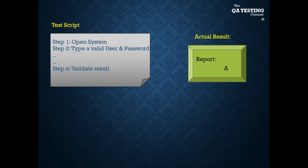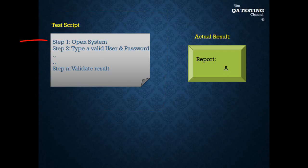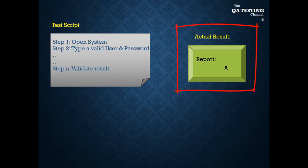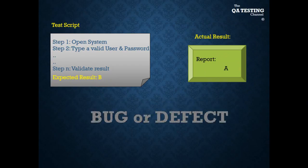The test executor, most of the time, gets a test script. The test script has all the steps that must be followed by the test executor. For example, step one: open the system. Step two: type a valid user and password, and so on. And finally, we validate the result. In the system, we got an actual result — the report is A. But the expected result is B. So we have a different result, and then we must report a bug or defect.